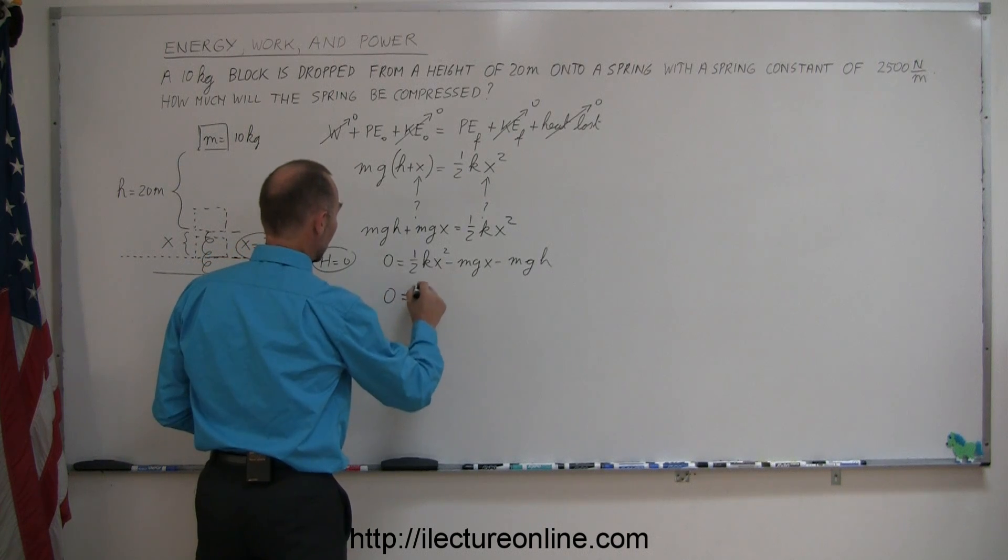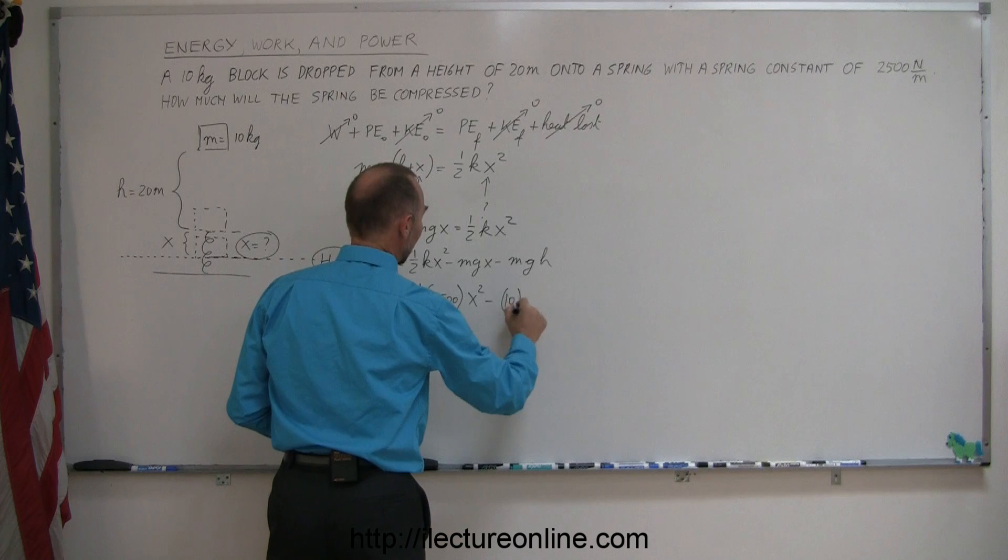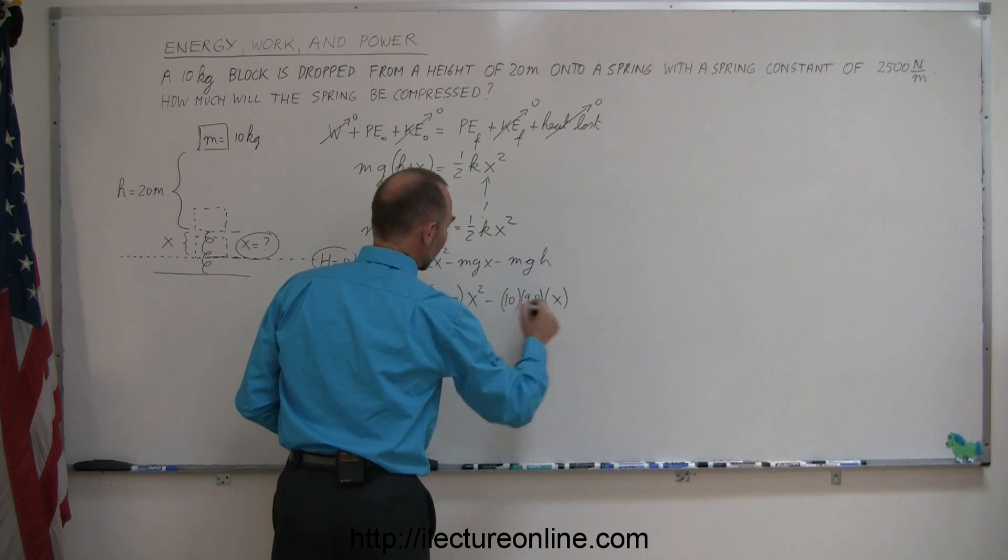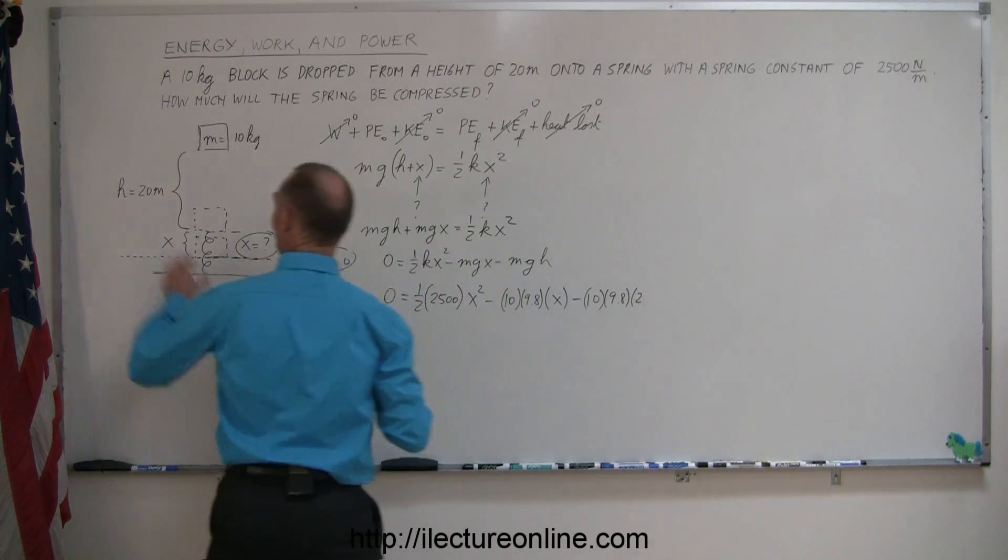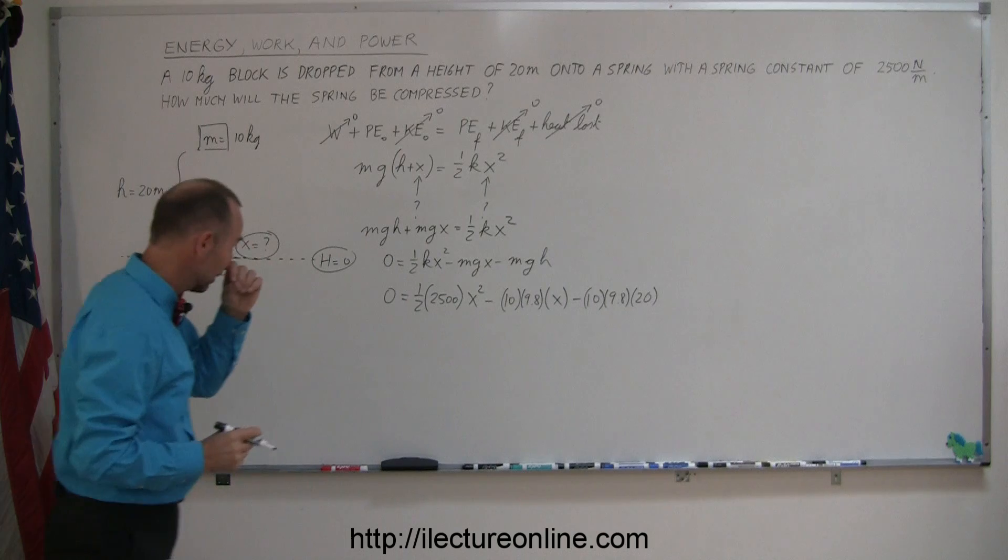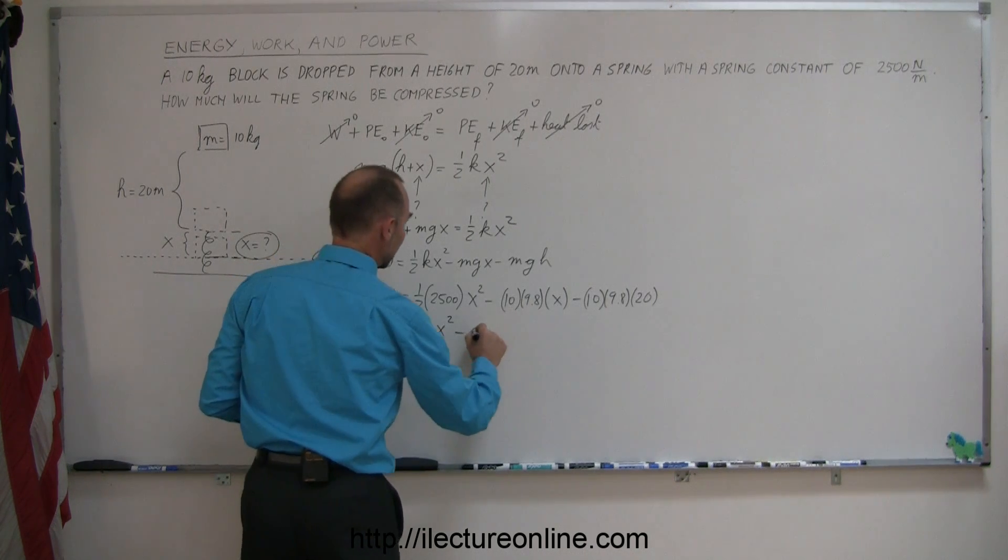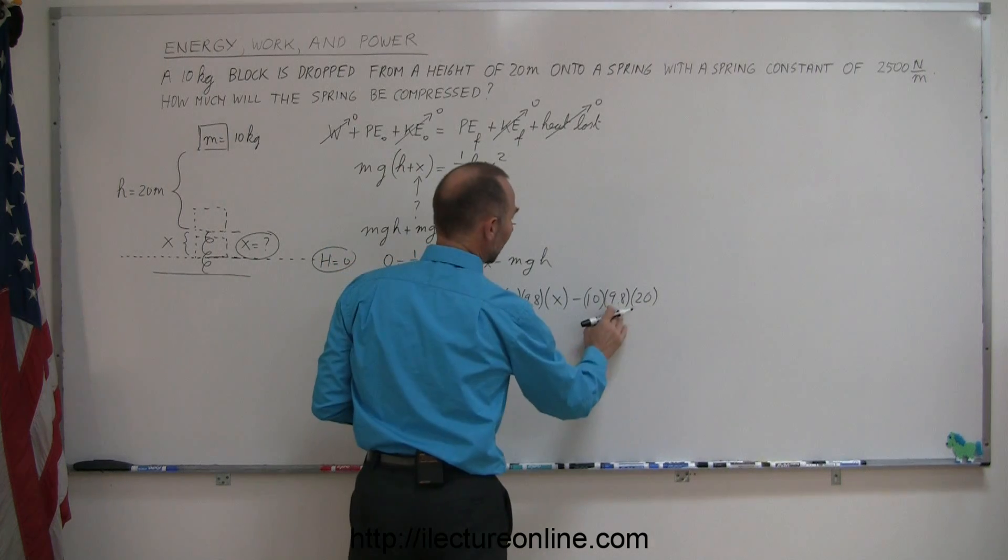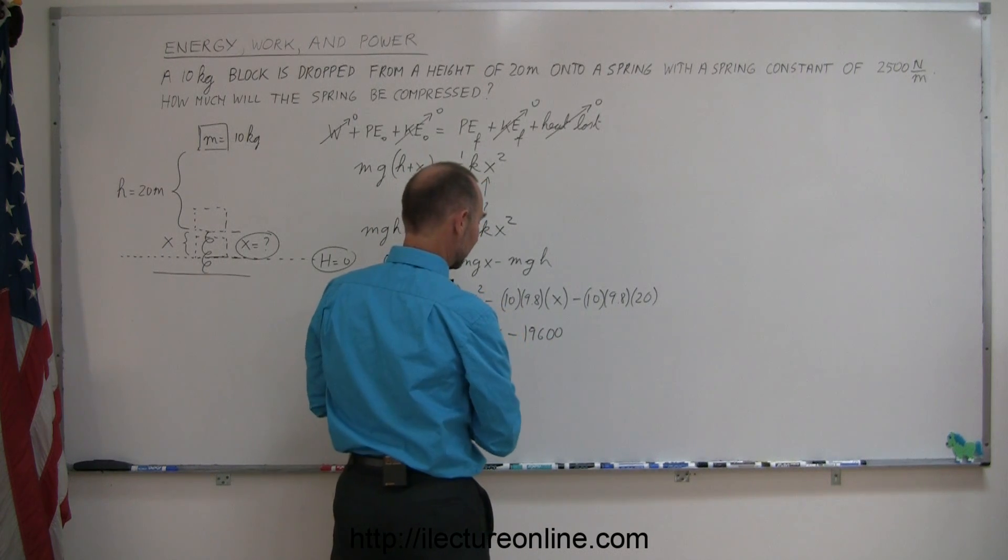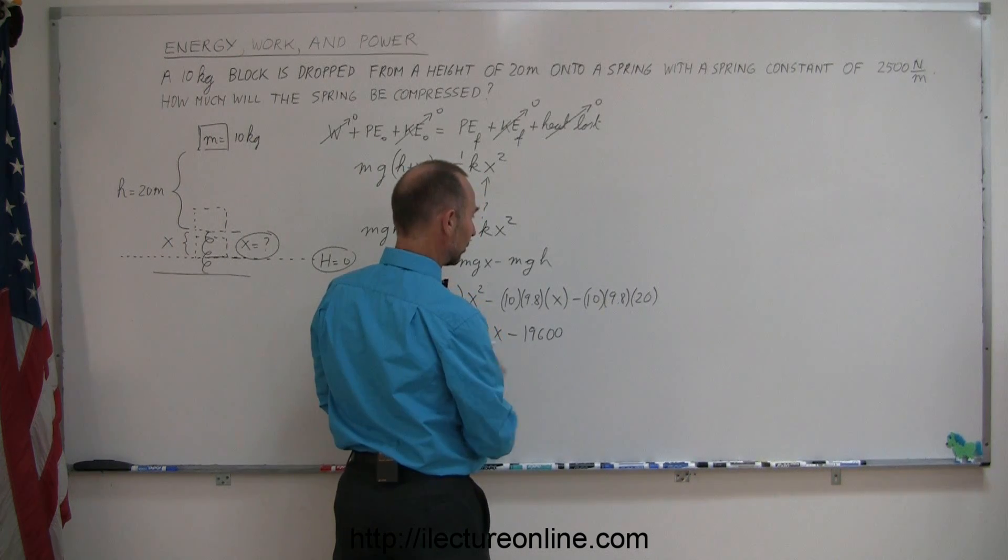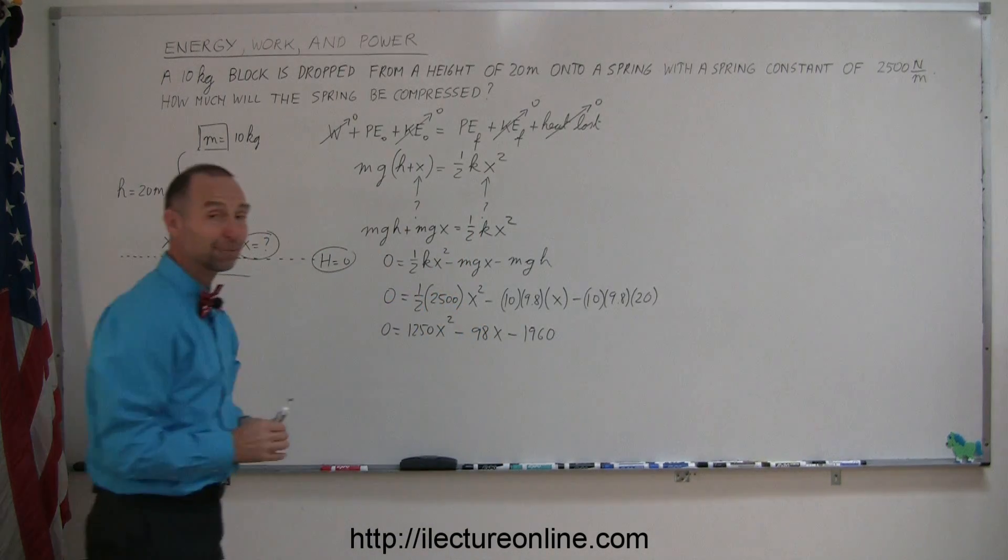So, zero equals 1 half times K, which is 2,500, times X squared, minus the mass, which is 10, times G, which is 9.8, times X, which is what I'm looking for, minus 10 times 9.8 times 20. Simplifying that a little bit, I get zero equals 1,250 X squared minus 98X, and minus 1,960. There's my quadratic equation.